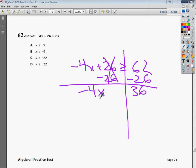Now, if that negative 4 is touching that x, that means they're multiplying. So I need to divide to get rid of it. So I'm going to divide by negative 4 on both sides.